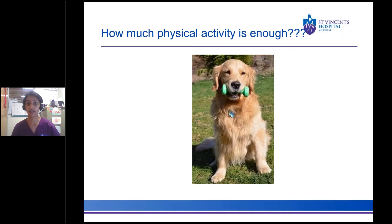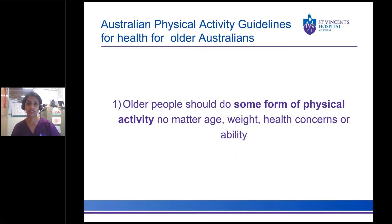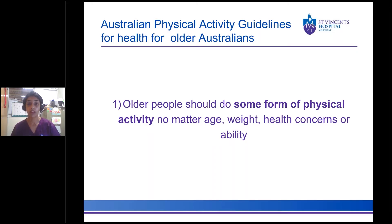How much physical activity is enough? The Australian Physical Activity Guidelines for the Health of Older Australians have five key points. Firstly, older people should do some form of physical activity regardless of age, weight, health concerns, or ability. When I refer to older Australians I mean those 65 years or older, or 55 years or older within the Aboriginal and Torres Strait Islander population. Some of these guidelines are also applicable to individuals of various ages, health status, and function, so they can apply to a slightly younger population too.